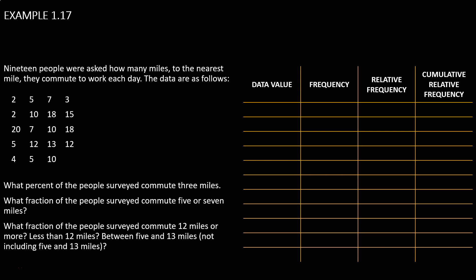First, let's notice that we don't have data values that range between 0 and 20. There's a lot of missing numbers there. Let's only list the data values that actually appear in our dataset.